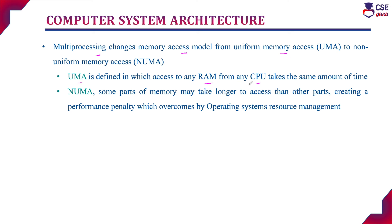In multiprocessing systems, the memory access model differentiates uniform memory access from non-uniform memory access. In uniform memory access, the time to access RAM from any CPU is the same. In non-uniform memory access, some parts of memory may take longer to access than other parts, and there may be a performance penalty that is overcome by the operating system's resource management. This is all about single processor and multiprocessor systems.